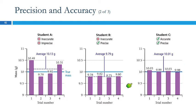And then this student did very well. The results are precise. They're very close to each other. And the average 10.01 is very close to 10.00. So this is what we're aiming for. We'd like to be accurate and precise.